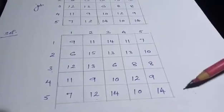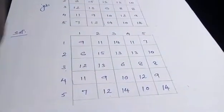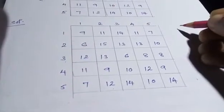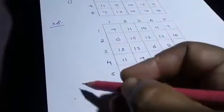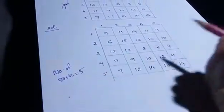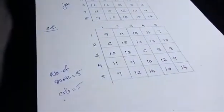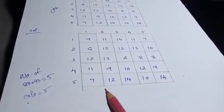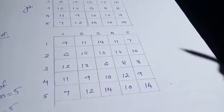So this is the solution. Again I have written the question. First, you have to check whether the assignment problem is balanced or not. To check balance, count the number of rows and columns. Here, the number of rows is 5 and the number of columns is also 5. Both are the same, so the problem is balanced.